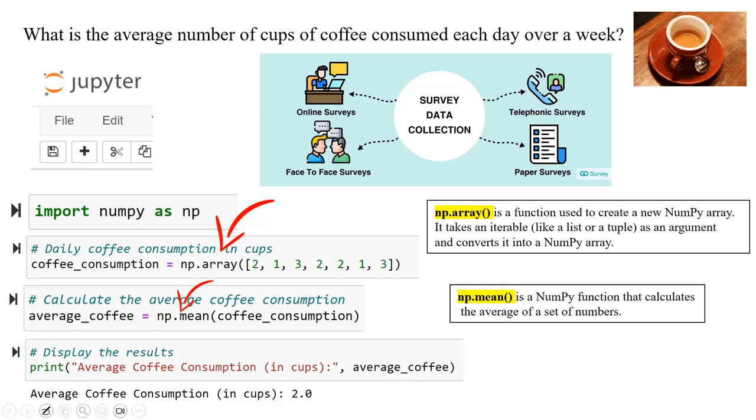The result should be average coffee consumption in cups: 2. So let's jump into Jupyter Notebook and check to see what's going on here.